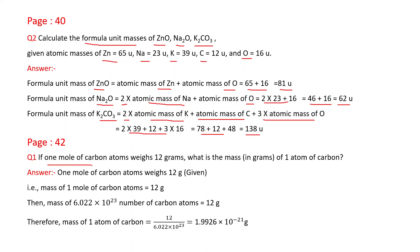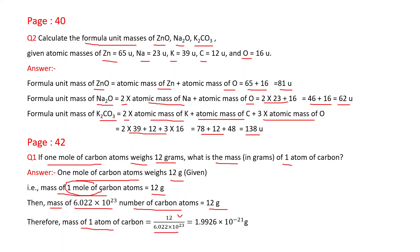If one mole of carbon atoms weighs 12 grams, what is the mass in grams of one atom of carbon? One mole of carbon atoms = 12 grams, and one mole contains 6.022 × 10²³ atoms. Therefore, mass of one carbon atom = 12 ÷ (6.022 × 10²³) = 1.9926 × 10⁻²³ grams.